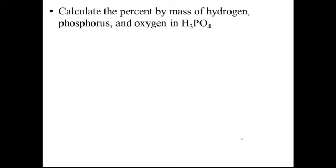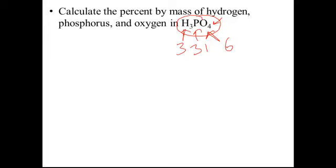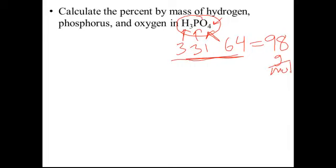Here's another example: calculate the percent by mass of hydrogen, phosphorus, and oxygen in the phosphoric acid molecule, H3PO4. First, figure out the mass of the entire molecule. Hydrogen has a mass of 1 and there are 3 of them — that's 3. Phosphorus has a mass of 31. Oxygen has a mass of 16 and there are 4 of them, so 16 times 4 is 64. The total mass is 3 plus 31 plus 64, which equals 98 grams per mole.